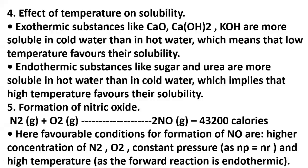For the effect of temperature on solubility: exothermic substances are more soluble in cold water than hot water, meaning low temperature favors their solubility. For substances like sugar and urea, they are more soluble in hot water than cold water — increasing the temperature speeds up their rate of solubility. For formation of nitric oxide, favorable conditions include high temperature concentration of nitrogen gas, oxygen gas, constant pressure, and high temperature to favor the forward reaction.